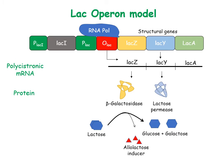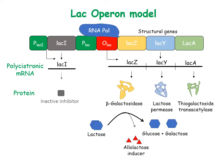The second protein is lactose permease, which transports lactose across the cell membrane. The third is transacetylase, which detoxifies the cell. The LAC repressor assembles a quaternary structure and binds to the LAC operator to inhibit transcription of the structural genes.